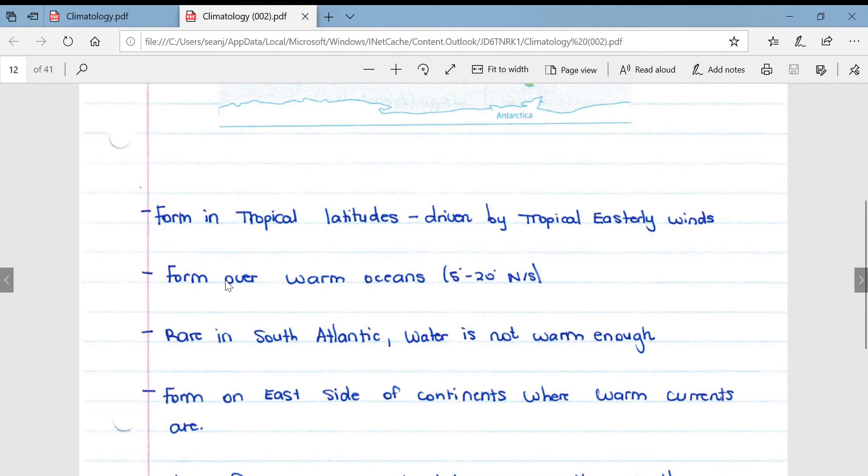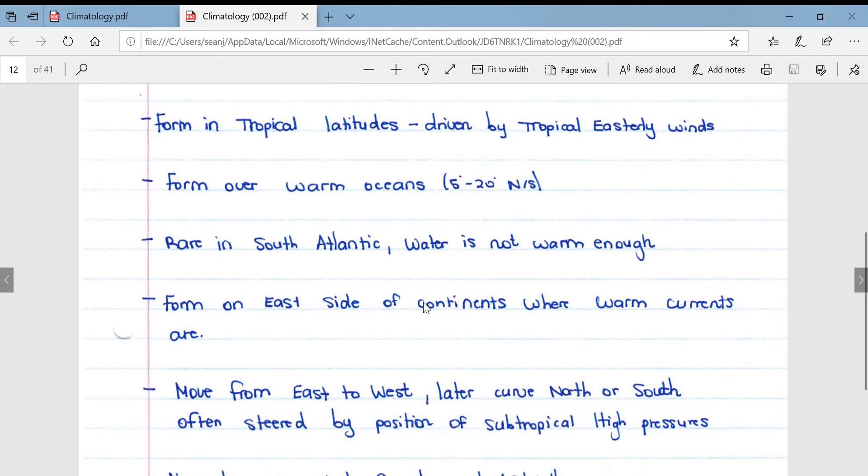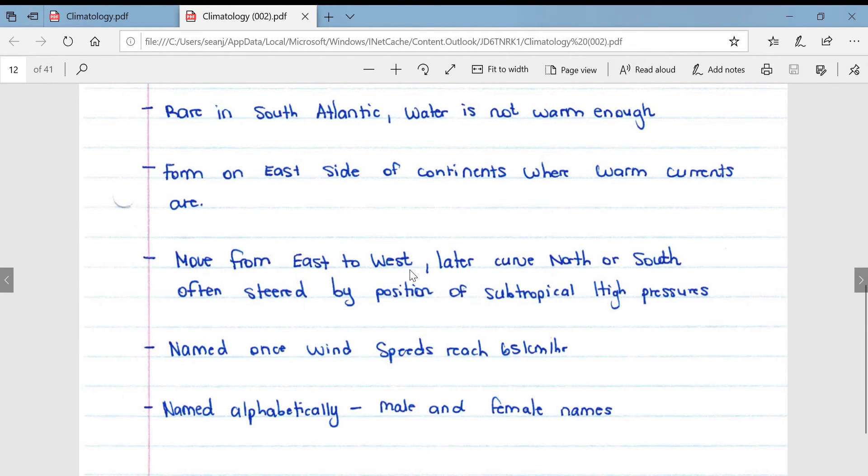They obviously form in tropical latitudes and are driven by the tropical easterly winds. They form over warm oceans between 5 and 20 degrees north and south of the equator. We'll get into why they only form within this range later. They are rare in the South Atlantic because the water is not warm enough to spur on their formation. They form mostly on the eastern side of continents where the warm currents are.